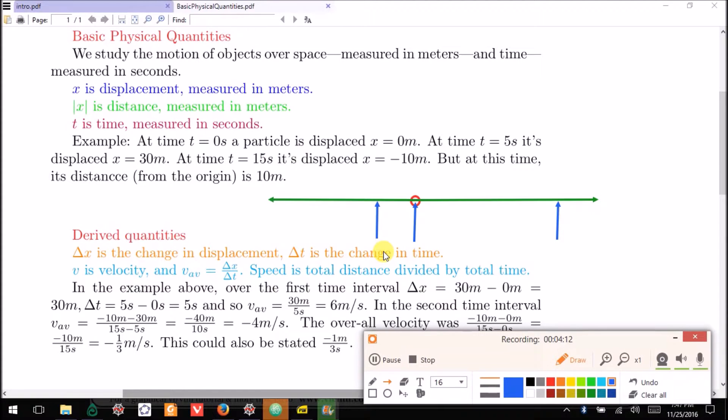So displacement can go up and down, whereas distance is always increasing because we always take the absolute value of the measurement. So that's displacement and distance. We will also study time measured in seconds.